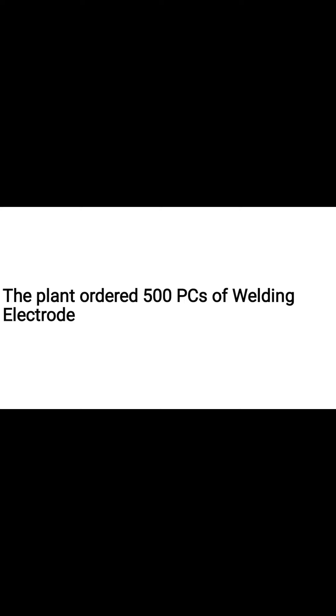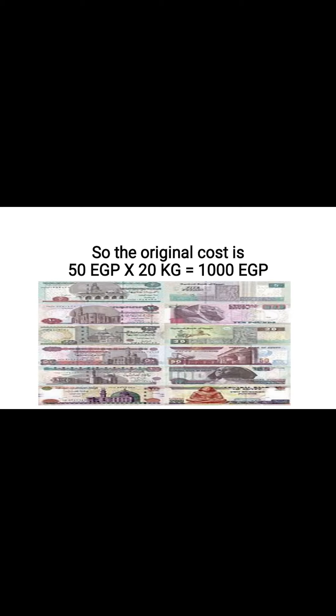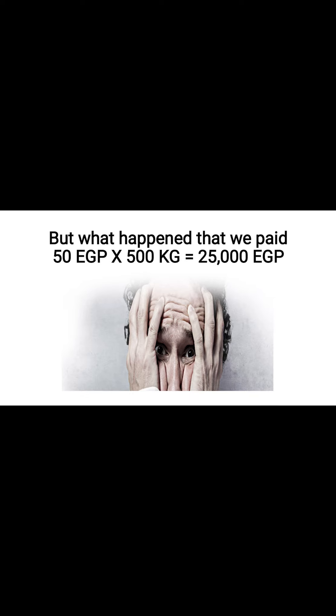The plant ordered 500 pieces of welding electrodes. 500 pieces is about 20 kilograms, but we purchased 500 kilograms instead of 500 pieces. If you consider that one kilogram equals about 50 Egyptian pounds, the original cost should be 1,000 Egyptian pounds. But what happened is that we paid 25,000 Egyptian pounds because we purchased 500 kilograms instead of 500 pieces, which equals 20 kilograms.